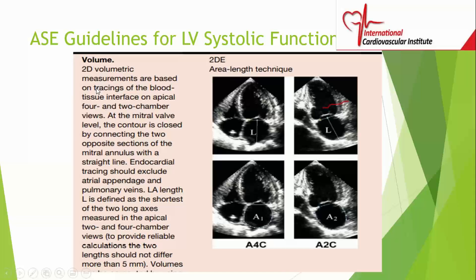Volumetric measurements are based on tracings of the blood-tissue interface on the apical 4-chamber and 2-chamber views. You start from one corner of the mitral annulus, trace the border, and come around to the other corner to close the gap. If using the area-length method: you get the area in the four-chamber view and the two-chamber view, and use the shortest of the two lengths.